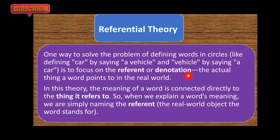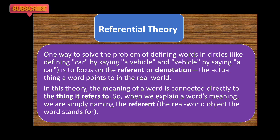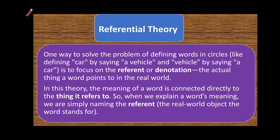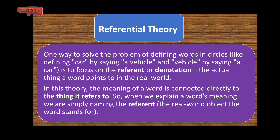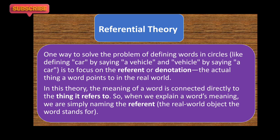یا تو ہم meaning سمجھ سکتے ہیں referent کے through جو real world میں exist کرتے ہیں، یا ہم سمجھ سکتے ہیں denotation کے through جو کہ ایک circular طریقہ ہوتا ہے۔ For example, in a dictionary the meaning of 'horse' might be 'a kind of animal,' and if you look up 'animal' you get 'horse, donkey, dog, etc.' Similarly, 'beautiful' maps to 'pretty' and 'pretty' maps back to 'beautiful' — this is circular.